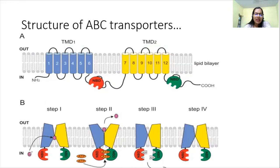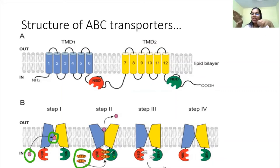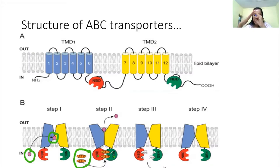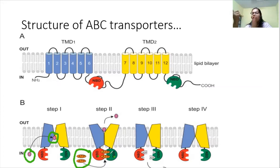The mechanism works as follows: first, the substrate molecule goes and binds to the binding region. Then two ATP molecules bind to the NBDs. The NBDs are initially far apart, but once ATP binds to NBD1 and NBD2, both domains come together, causing a conformational change. The ABC transporter opens up and the molecule is transported to the other side.